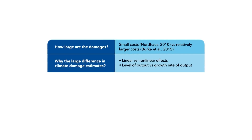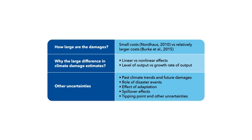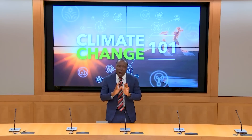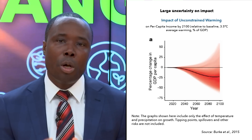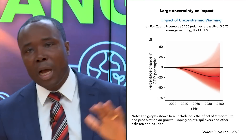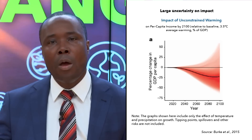Despite all the large damages from climate change that we have discussed so far, it is worth noting the uncertainty associated with these estimates. In addition to climate science-related uncertainties, the lack of clear answers to questions such as whether temperature increases affect the level or growth rate of output, whether past climate trends are good enough for predicting future damages, and whether we can accurately quantify spillover rates, creates further uncertainty. On this graph, at a global warming of 3.5 degrees Celsius, the output effect ranges from a large increase in global GDP to a large decrease, with a negative central case of 25% of GDP losses.